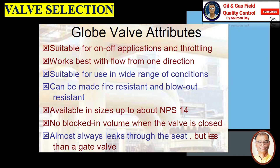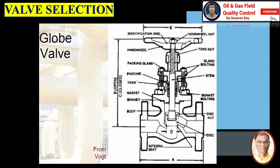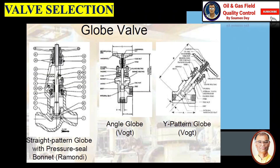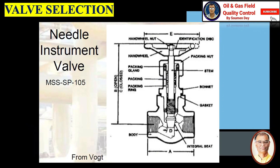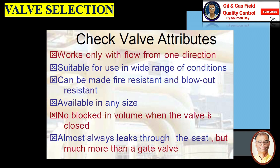Globe valve has no blocked-in volume when the valve is closed and almost always leaks through the seat, but less than the gate valve. This is a typical globe valve sketch: on the left you can see a straight pattern globe valve with pressure shield bonnet, in the middle an angle globe valve, and on the right a Y-pattern globe valve and needle instrument valve.